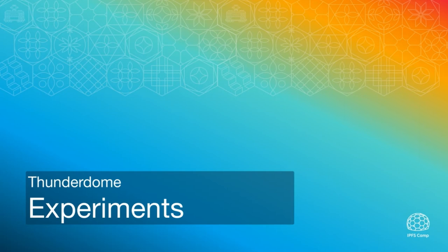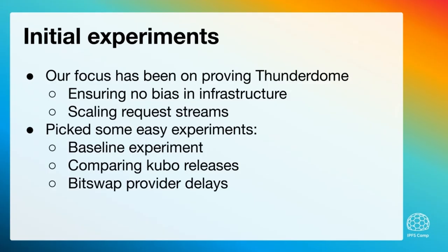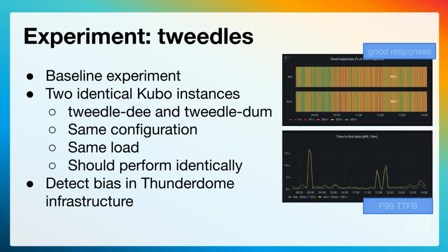I'm going to talk about some of the experiments we've run using Thunderdome. Initially we've focused on proving Thunderdome, ensuring there's no bias, and making sure we can scale these request streams properly. We've picked some easy experiments as a baseline. We've also run an experiment recently to compare the latest version of Kubo against previous versions, and some experiments around altering the delay between when we're fetching blocks — deciding when to go out to the DHT versus when to just request blocks from peers. Our baseline experiment is called Tweedles, based on the old Tweedledum and Tweedledee poem by Lewis Carroll.